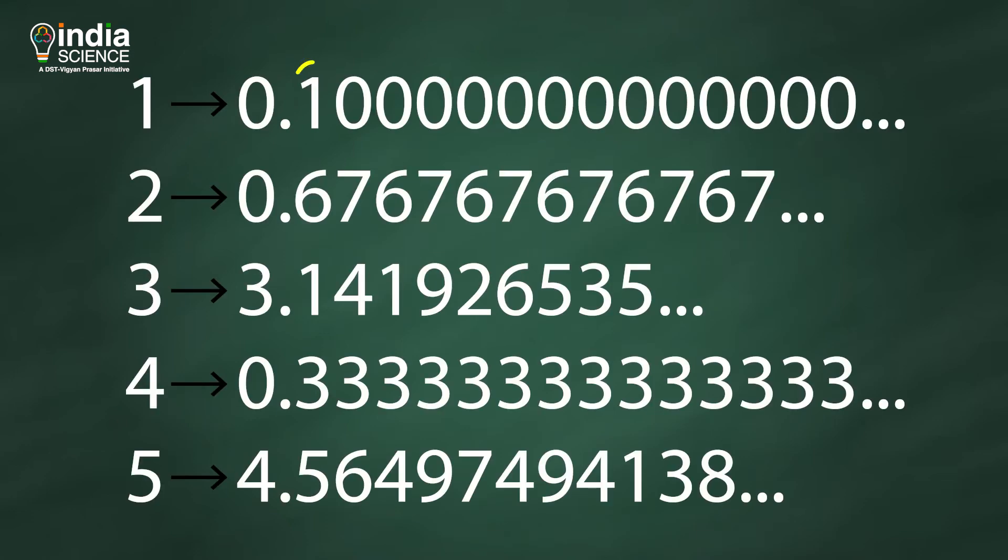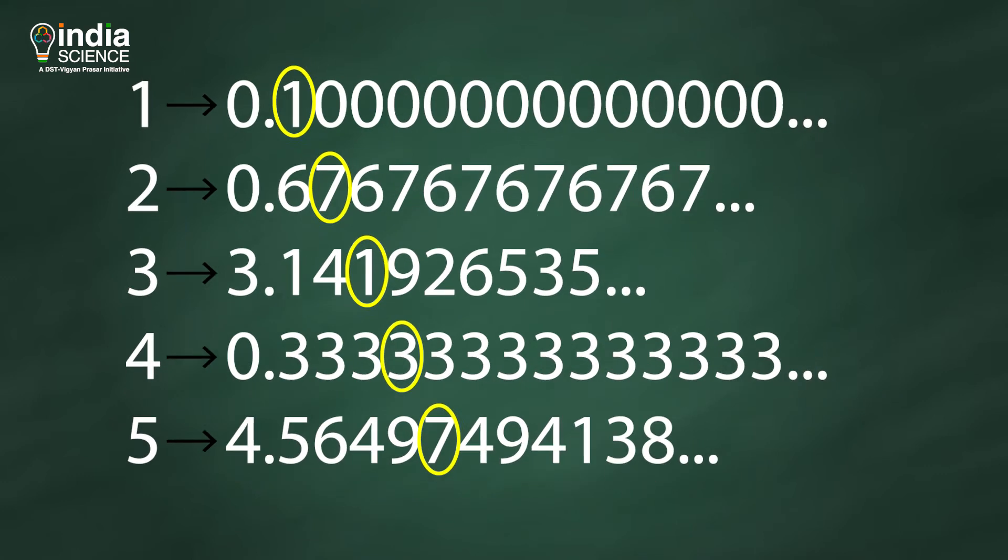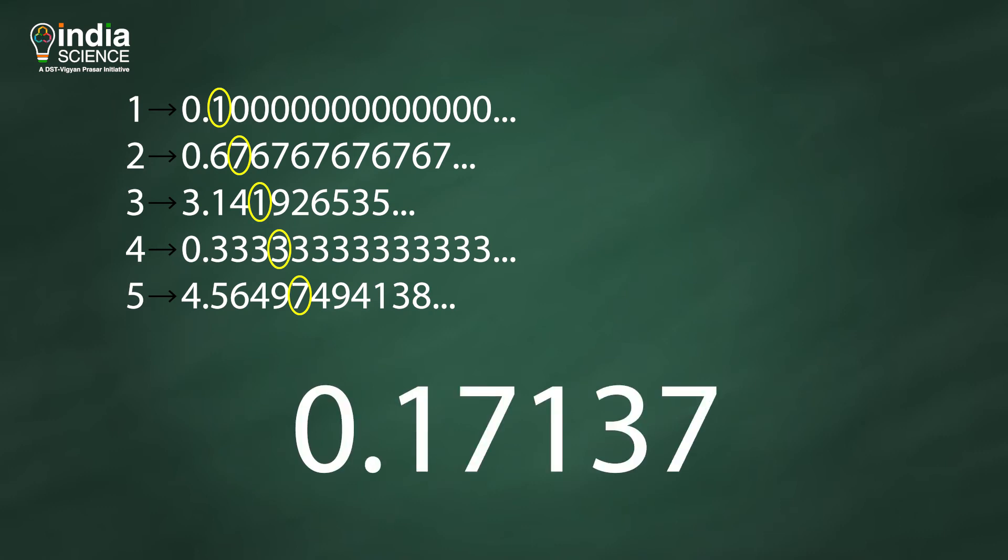Let's see how. Let's take the first digit of the first number, and second digit of the second number, and so on. From our first real number, we get 1. From the second, we get 7. From third, we get 1, and so on. This turns out to be 0.17137.